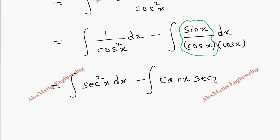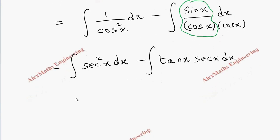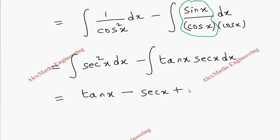So we have the integral of secant squared x dx minus the integral of secant x tan x dx. Using the formulas: the integration of secant squared x is tan x, and the integration of secant x tan x is secant x. Therefore the final answer is tan x minus secant x plus C.